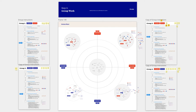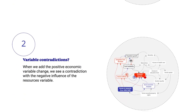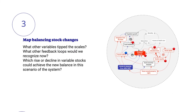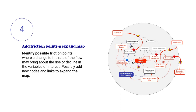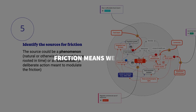We've been developing new methodologies mixing design, futures, and complexity studies - you can see them in workshop format. In general, we track variable change influence in a network, system dynamics perspective. Then we look for variable contradictions, map balancing stock changes, add friction points and expand the map, and finally identify the sources of friction to find opportunities for action. Friction means we can act.